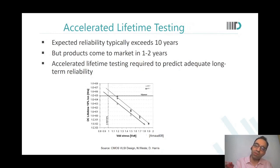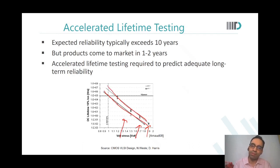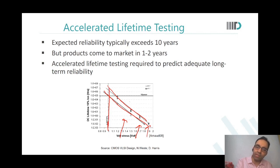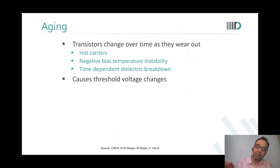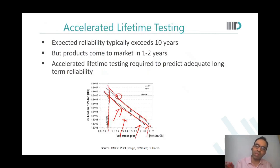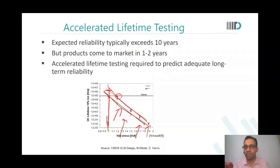We apply different kinds of stress to generate these degradation curves. Then at the target voltage — say 0.9 V plus or minus 10% — we extrapolate to see that the system will live for 10 years. A lower stress curve might show the device living even 20 years. This is how you do accelerated life testing.